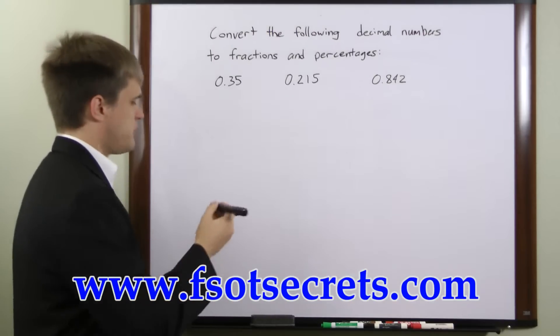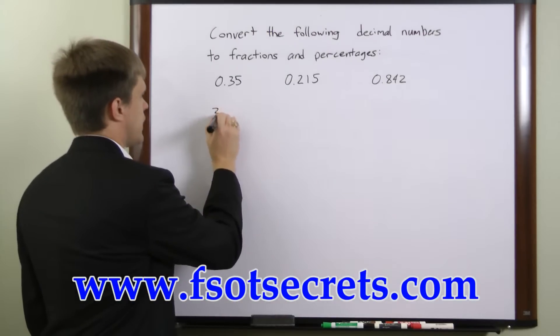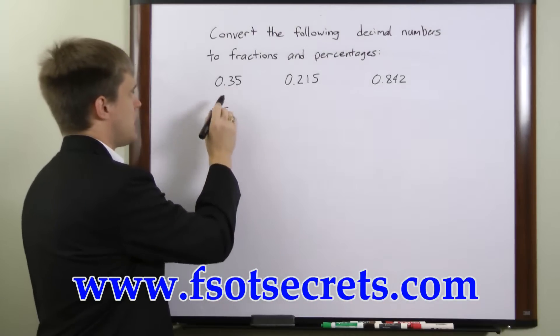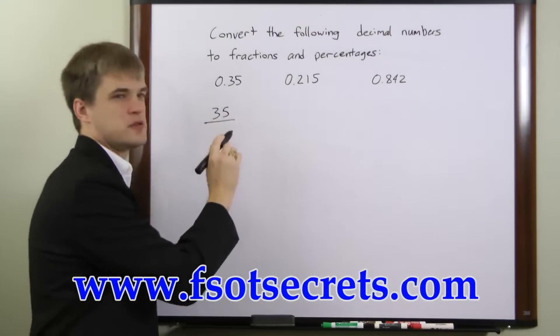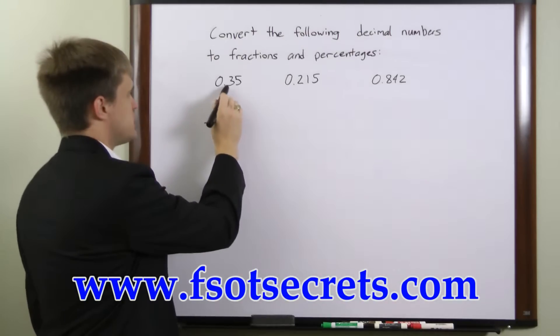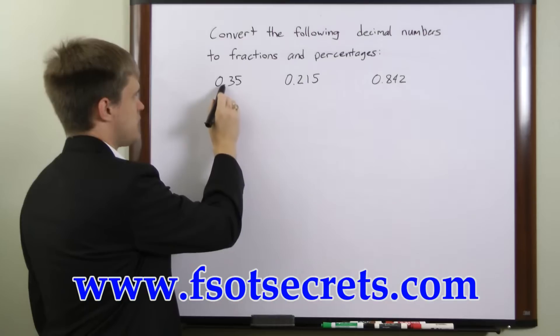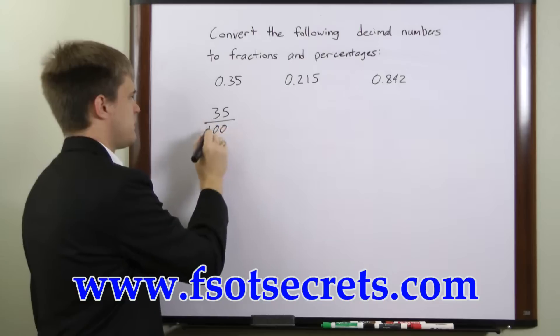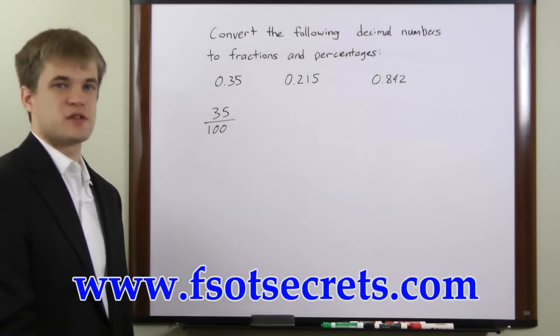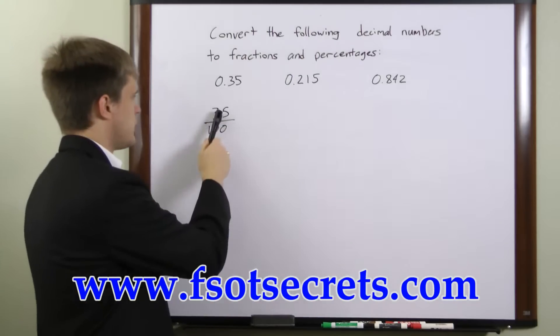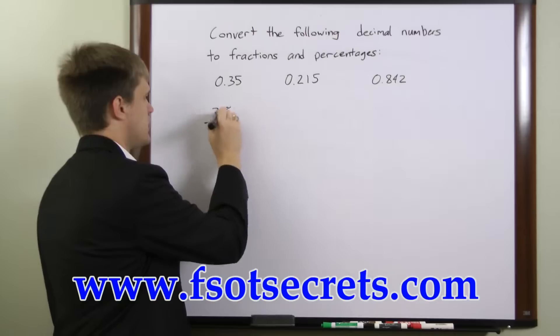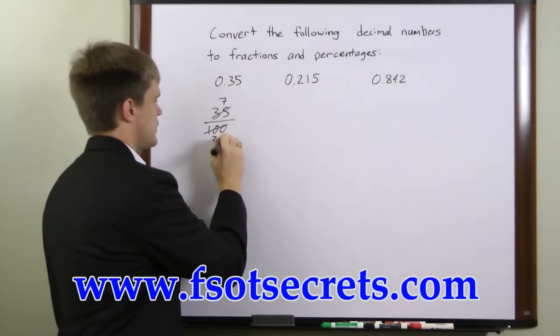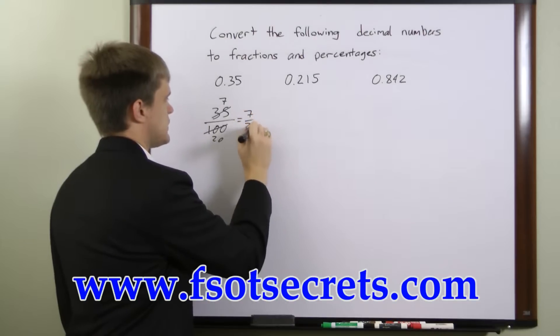To convert 0.35 to a fraction, we'll write the two digits in here as the numerator and we'll take a look at the rightmost digit. The rightmost digit is two decimal places to the right of the decimal, so we're going to write two zeros in the denominator, so we have 35 over 100. This can be reduced by dividing both the top and the bottom by 5. 35 over 5 is 7, 100 over 5 is 20, so this is equal to 7 over 20.